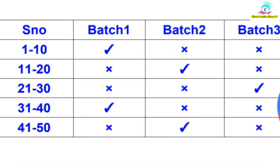We have a rule for 90 days — a guideline. The first 10 days is Batch 1, which has 10 members. They have 1/3rd part. They have the first 10 days in college. After that, they also have the same batches.